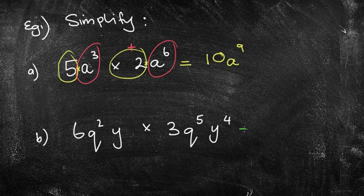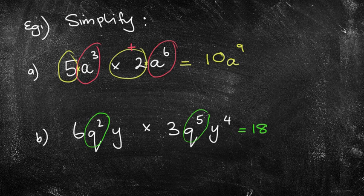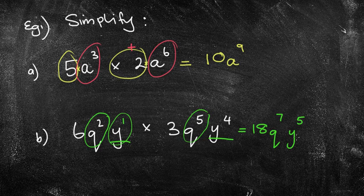What about the next one? 6 times 3, that's going to be 18. Now here, I need to look at the ones that have the same bases. So we're going to have q to the power of 7, and then we've got y and y to the power of 4. Well, that's actually y to the power of 1. So 1 plus 4 is 5. So I get y to the power of 5. Be careful. A lot of people forget about the power of 1 there.